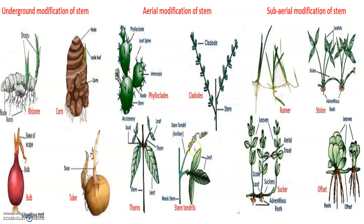When we see the modifications of the stem, we can find stem tendrils. They are spirally coiled and help plants to climb, such as in gourds, cucumber, pumpkin, watermelon and grapevines. Axillary buds of the stem may also get modified into woody, straight and pointed thorns, found in plants such as citrus and bougainvillea, protecting the plant from animals. Some plants of arid regions modify their stems into flattened — as in Opuntia — or fleshy cylindrical — as in Euphorbia — structures that contain chlorophyll and carry out photosynthesis.